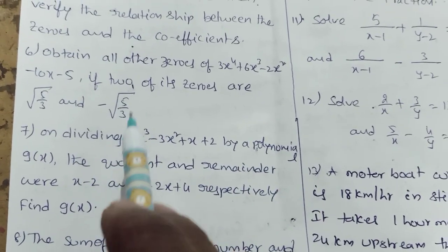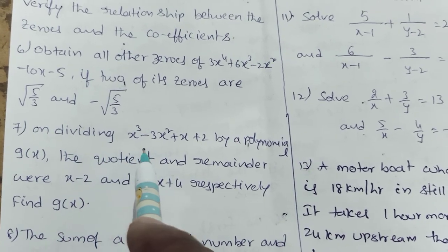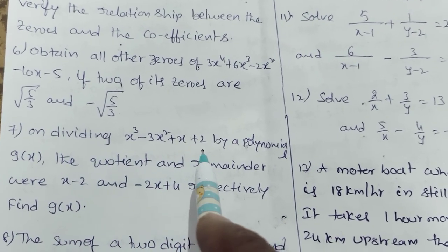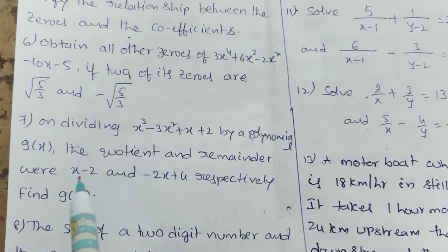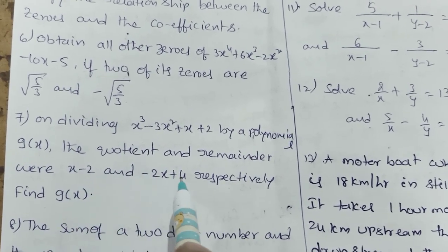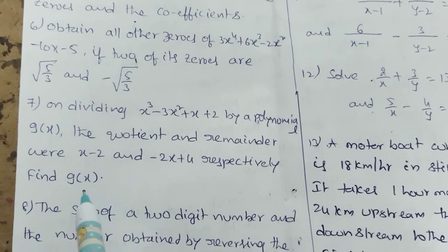Obtain all other zeros of 3X to the power of 4 plus 6X cube minus 2X square minus 10X minus 5, if two of its zeros are root 5 by 3 and minus root 5 by 3.